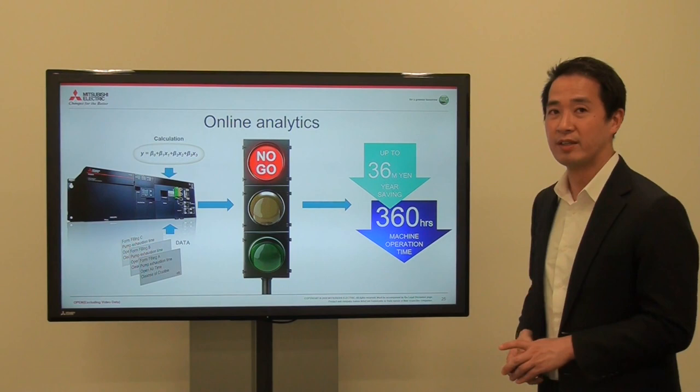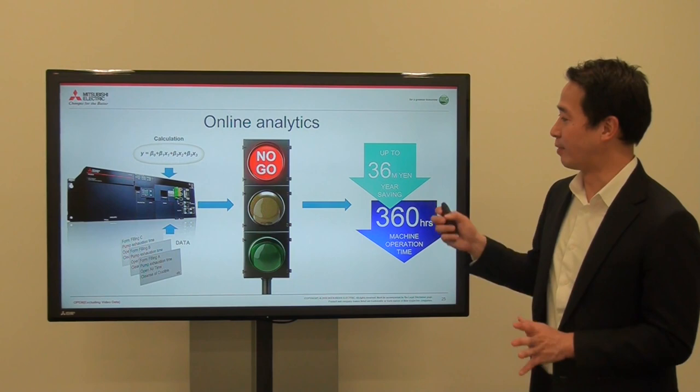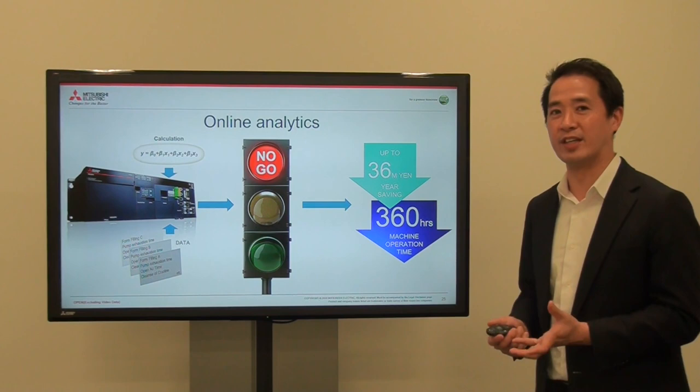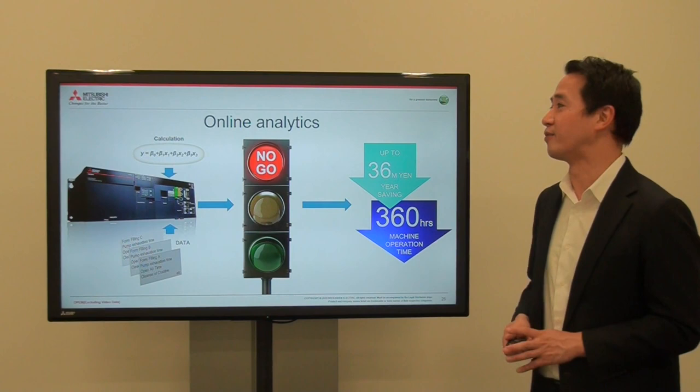You can see the results: it's a big reduction in lead time because we don't do the pre-testing. It saved them up to 360 hours of machine operation time and over 36 million yen per year in savings — which is a big benefit. And remember, this is only one machine. If they could do the same for other machines, they would be able to save this much time for every machine. It was a great project and it worked out for us.